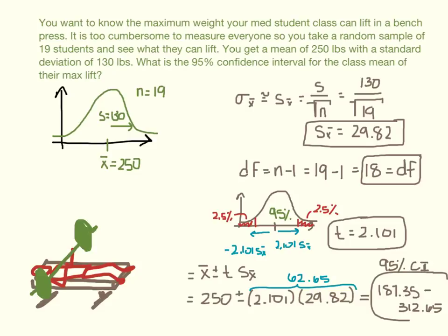That the mean, we're 95% sure that the mean, not sure. Our confidence is 95% that it is in this range over here. And so that would be our 95% confidence interval of what this class can bench press.